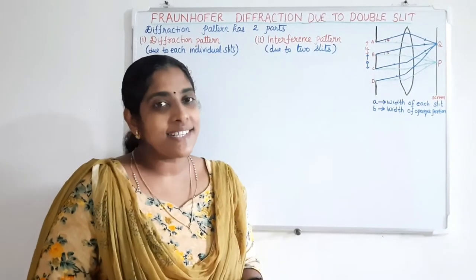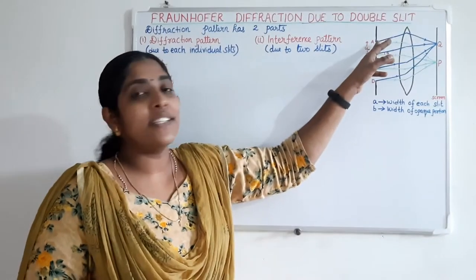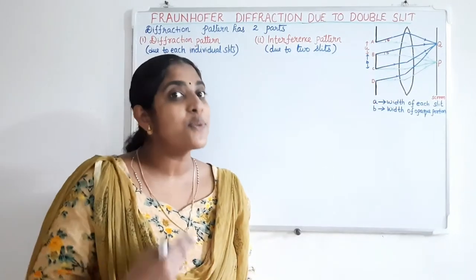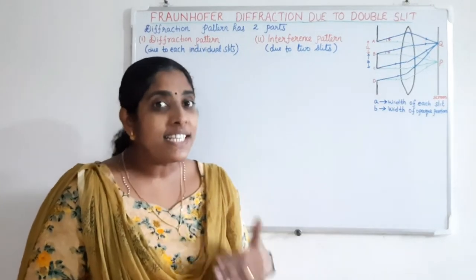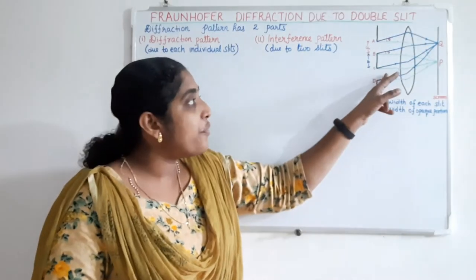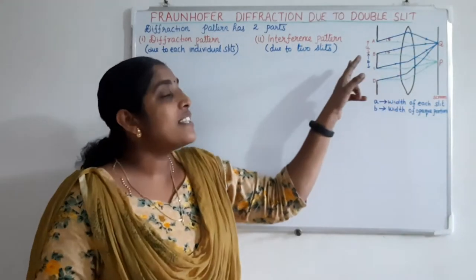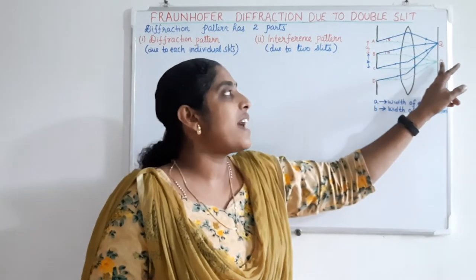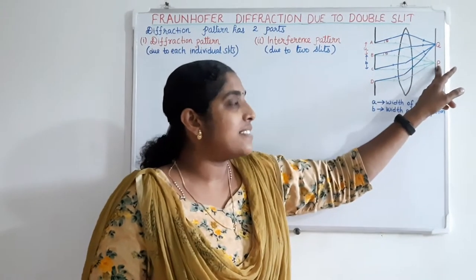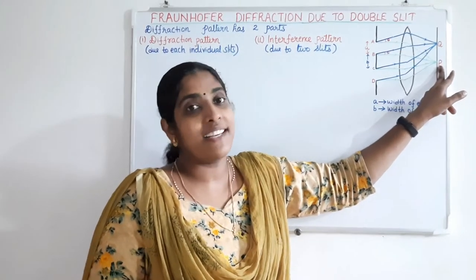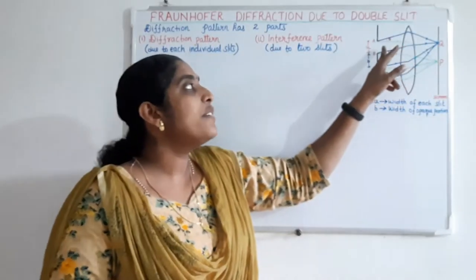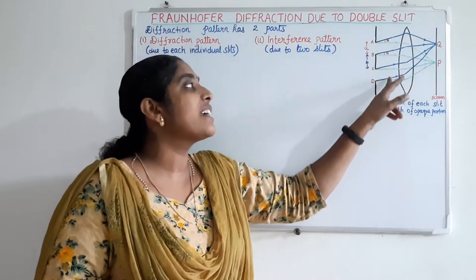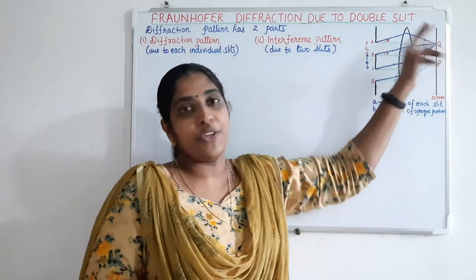Then according to Huygens' principle, each point on this incident wavefront acts as a source of secondary wavelengths. The wavelets moving along the same direction as the incident ray will focus at the center and produce a center bright image. All the wavelets which are diffracted at an angle theta get focused at another point Q.